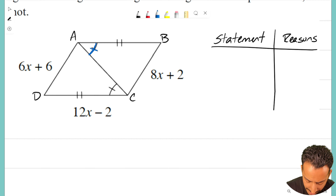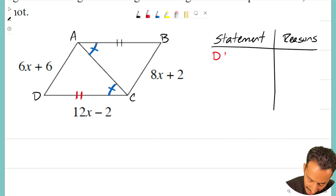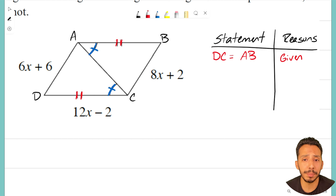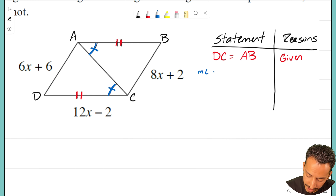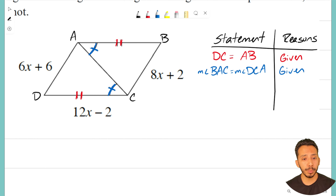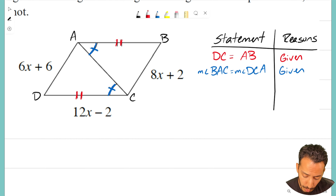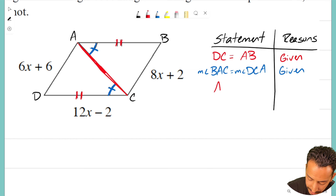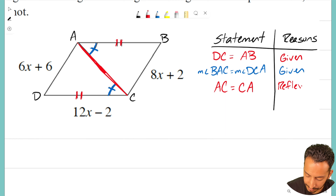I notice angle A equals angle C. I also know that side DC equals side AB — I'll write that into the proof right away because it's given. I also know that the measure of angle BAC equals the measure of angle DCA — again, that's given. So I have a side and an angle. If I have one more side I can use Side-Angle-Side. Both triangles share side AC — I can write that AC equals CA, and the reason for that is the Reflexive property.